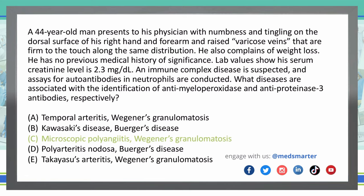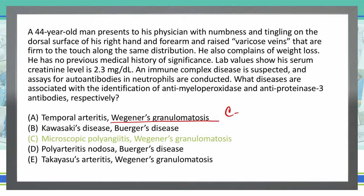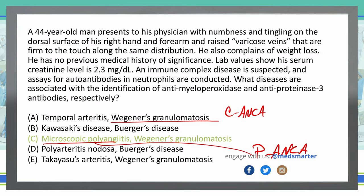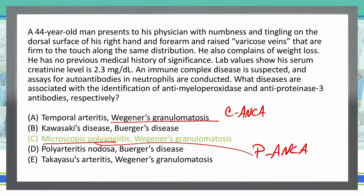Wegener's granulomatosis is a vasculitis in which we see necrotizing granulomas form in the lungs and kidneys. As mentioned, it is associated with anti-proteinase 3 antibodies and has a cytoplasmic distribution rather than a perinuclear distribution — making it a C-ANCA, or cytoplasmic antineutrophil cytoplasmic antibody. Microscopic polyangiitis is a P-ANCA. For both of these, you can do an antibody titer to help indicate disease severity.